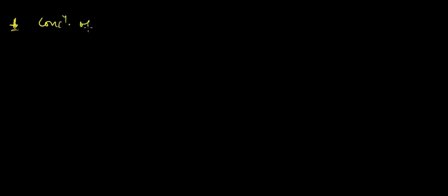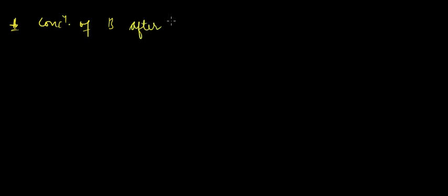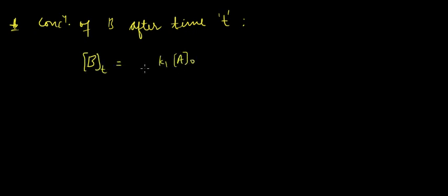We saw the series reaction kinetics in the last lecture, so we'll be continuing on the same. We saw that the concentration of B after time T was written as B(t) equals k1·A0 divided by (k2 minus k1), times e to the power minus k1·t.